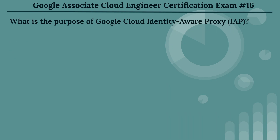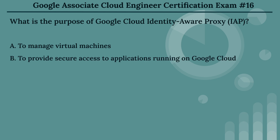The sixteenth question: what is the purpose of Google Cloud Identity-Aware Proxy? The options are: Option A, to manage virtual machines. Option B, to provide secure access to applications running on Google Cloud. Option C, to store large datasets. Option D, to analyze large datasets.